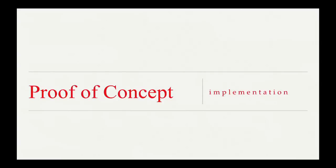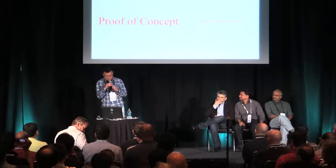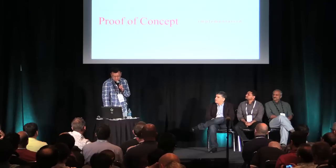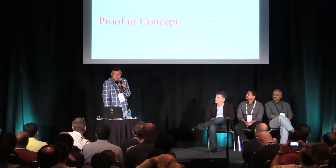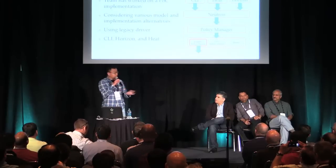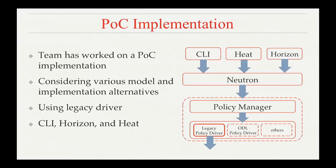Thanks Sumit for the thorough explanation of the model. As a team we put together a proof-of-concept implementation and we are going to demo it. The POC implementation renders all policy constructs into native Neutron constructs — that is the architecture. We can configure this using CLI, Heat, or Horizon, and through Neutron the policy manager, newly developed for this project, renders everything down to native Neutron constructs.